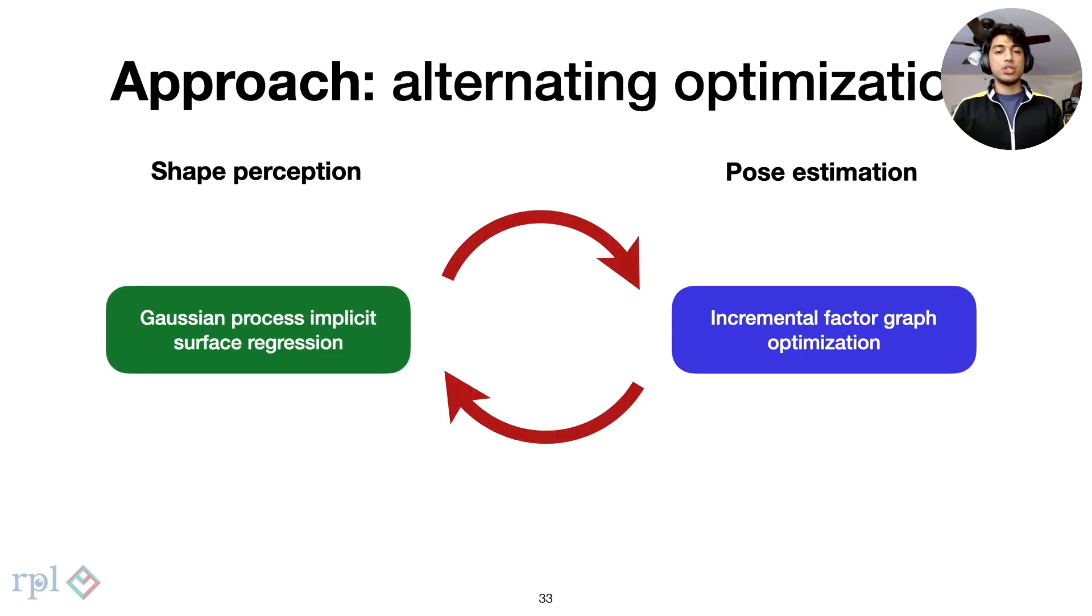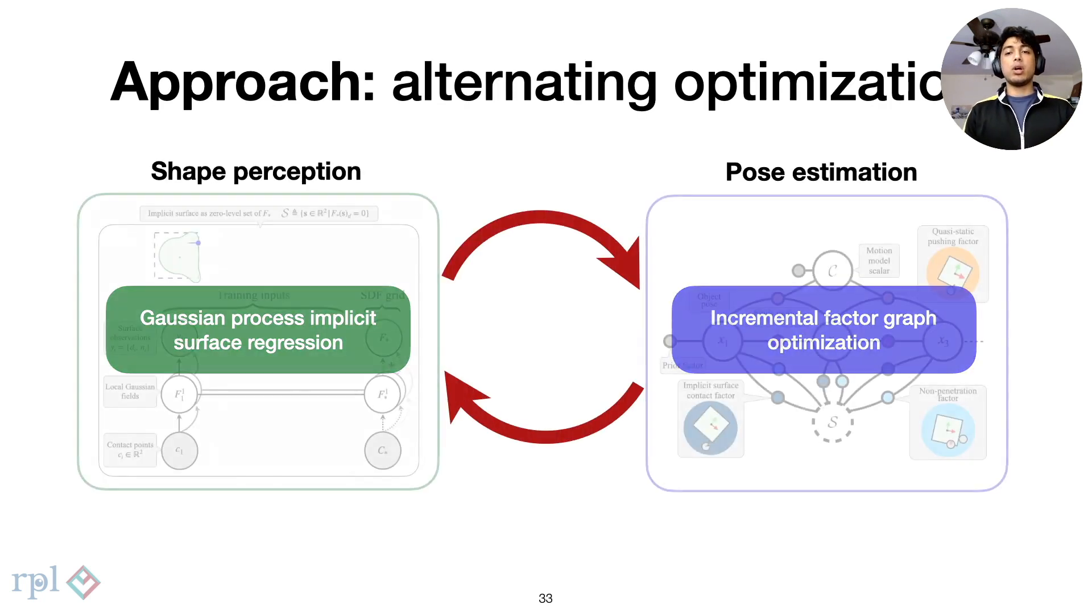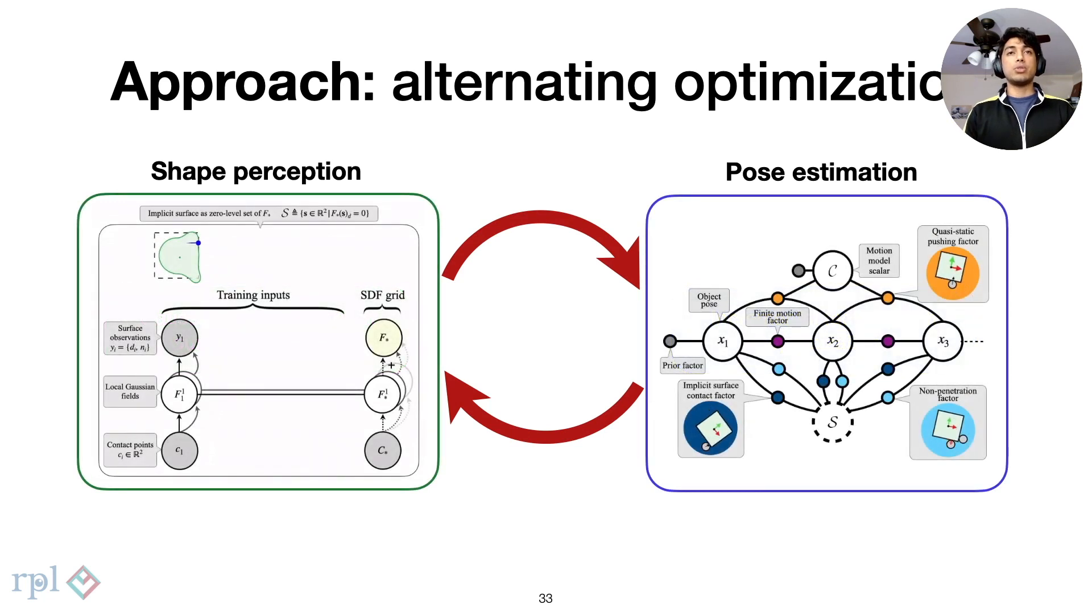This results in bounded optimization times and real-time pose and shape estimates at 100 Hz. This back-and-forth optimization lets us faithfully estimate our shape and pose of planar objects.